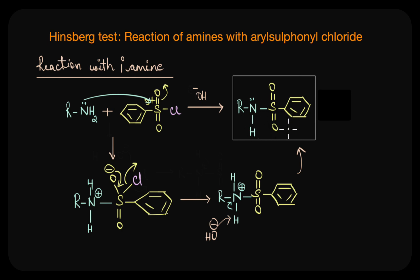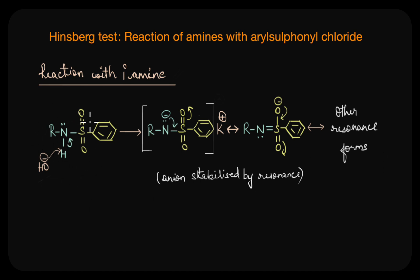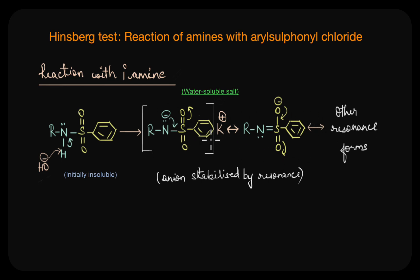If you look at the product carefully, there is a highly acidic hydrogen atom attached to the nitrogen atom. This hydrogen is strongly acidic because it is attached to an electronegative nitrogen atom and because of the presence of a strong electron-withdrawing sulfonyl group. This means it can react with an alkali solution and form a soluble salt. The initially formed sulfonamide is insoluble in water and forms a solid precipitate, but when we add excess alkali solution, this acidic hydrogen gets deprotonated by the base and forms a water-soluble salt. The anion formed after deprotonation is highly stable, stabilized by multiple resonance forms.